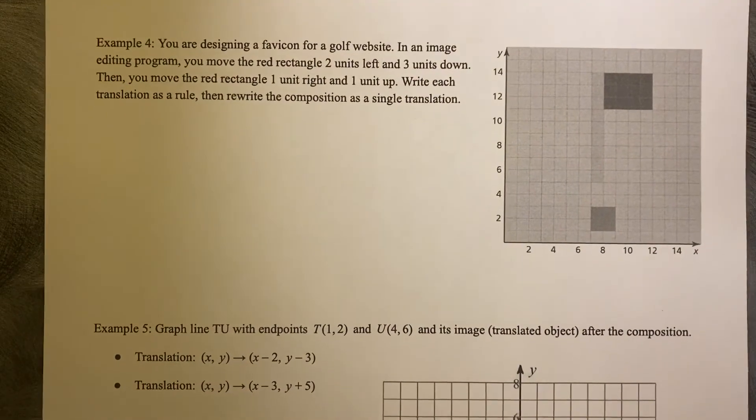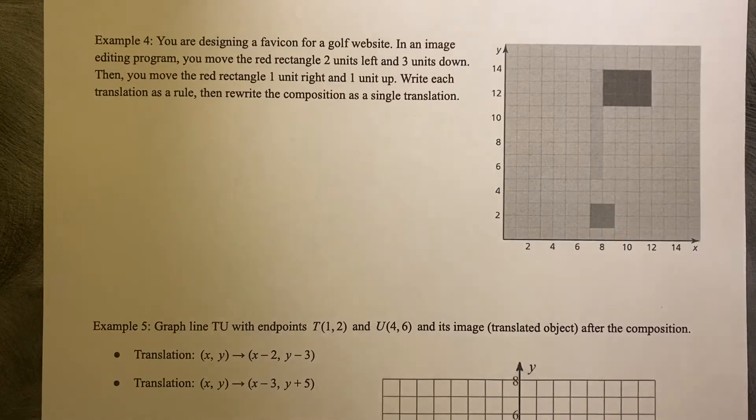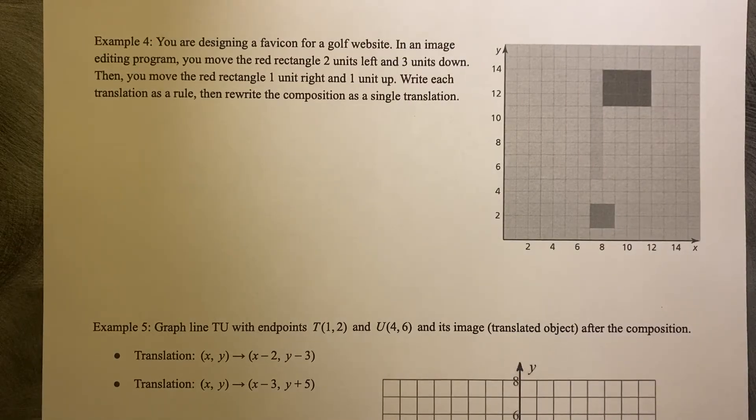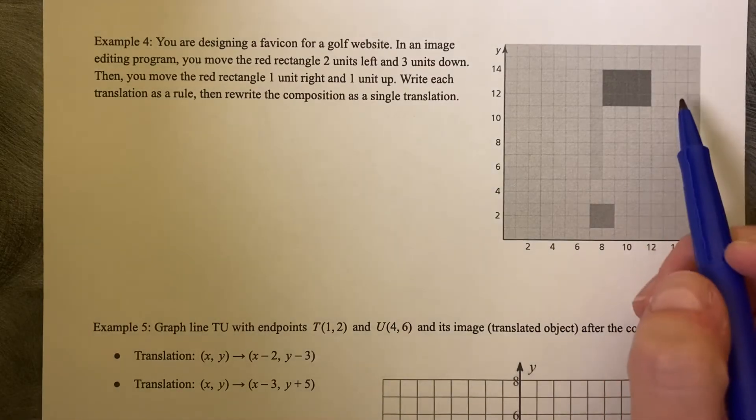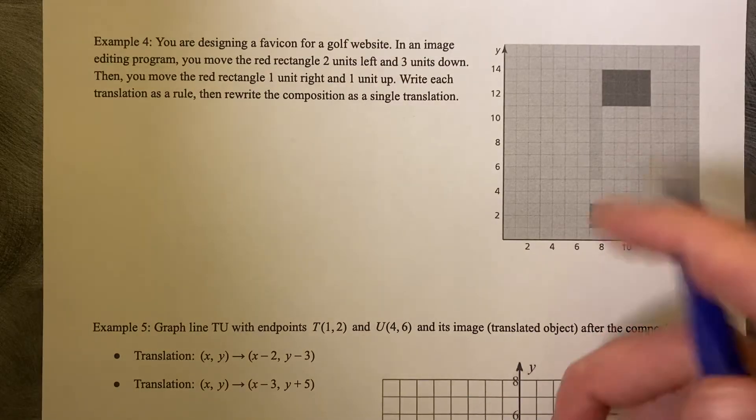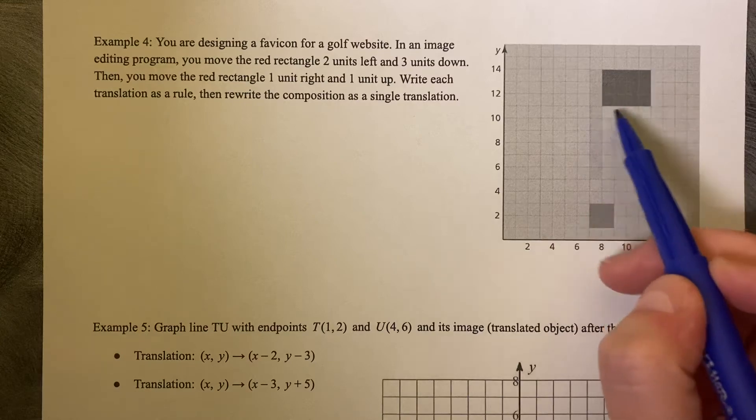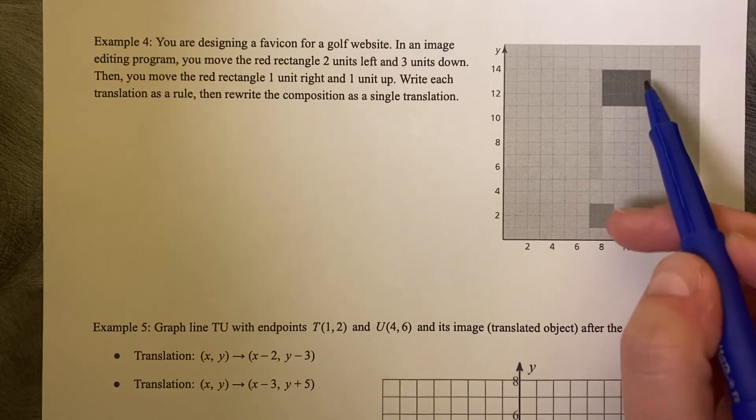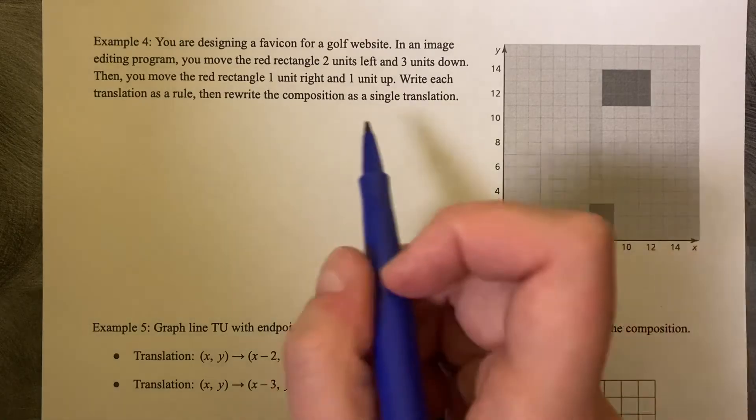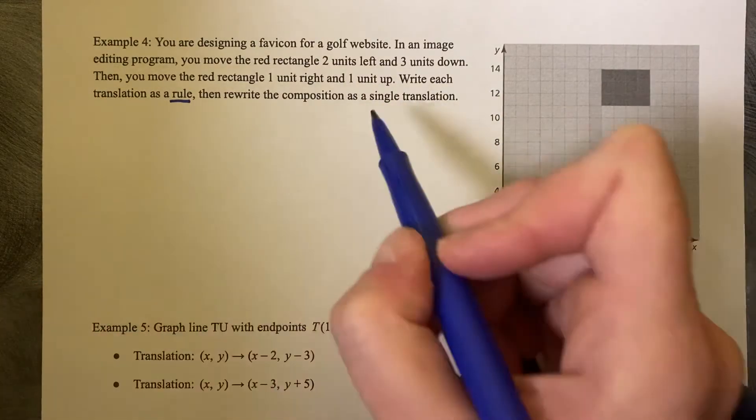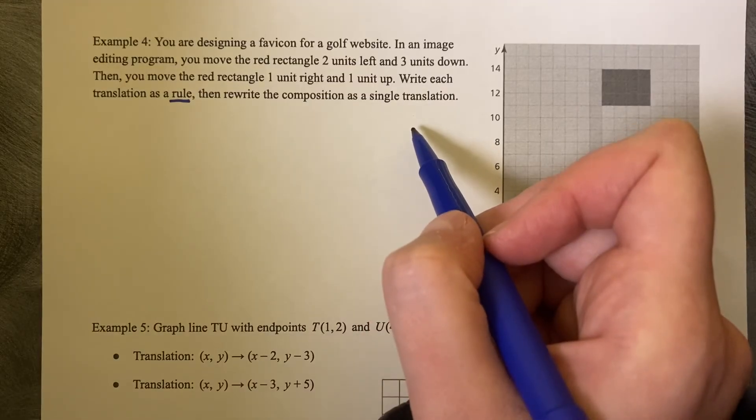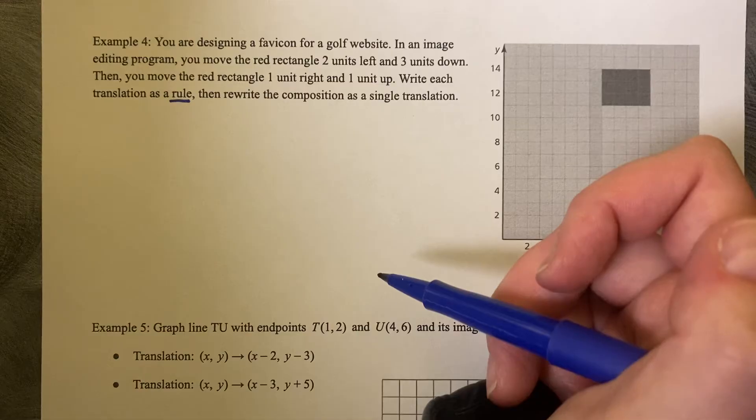Example number 4. You are designing a favicon for a golf website. In an image editing program, you move the red rectangle two units left and three units down. Then you move the red rectangle one unit right and one unit up. Write each translation as a rule and then rewrite the composition as a single translation. So the red box that they mean is this one right here. It's not red on your notes, but this, or I'm sorry, this rectangle is the red one. And we'd like to, we can do this even without the grid. We'd like to write a rule, write it as a rule. So that's the (X, Y). And then we'd like to write it as a single translation. So how could you go from the start to the end without the in-betweens?